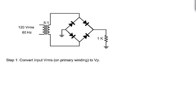First, we must convert the input RMS voltage to peak voltage. To convert RMS voltage to peak voltage, simply divide the RMS voltage by 0.707. The peak value of 120 volts RMS is 170 volts.